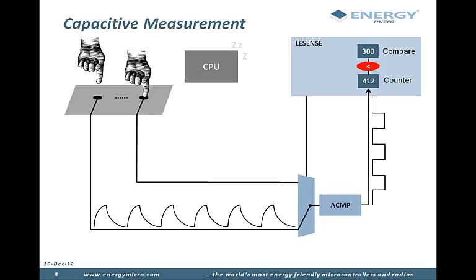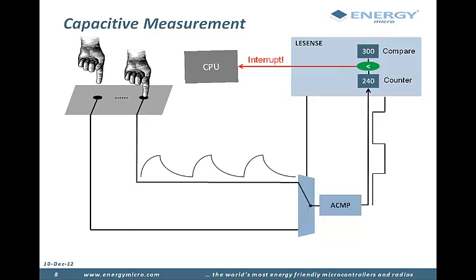When a human finger comes close to the touchpad, the capacitive value changes, which in turn changes the oscillation frequency. An interrupt can then be issued. Typical current consumption is less than 2 microamps while monitoring a couple of touch buttons.